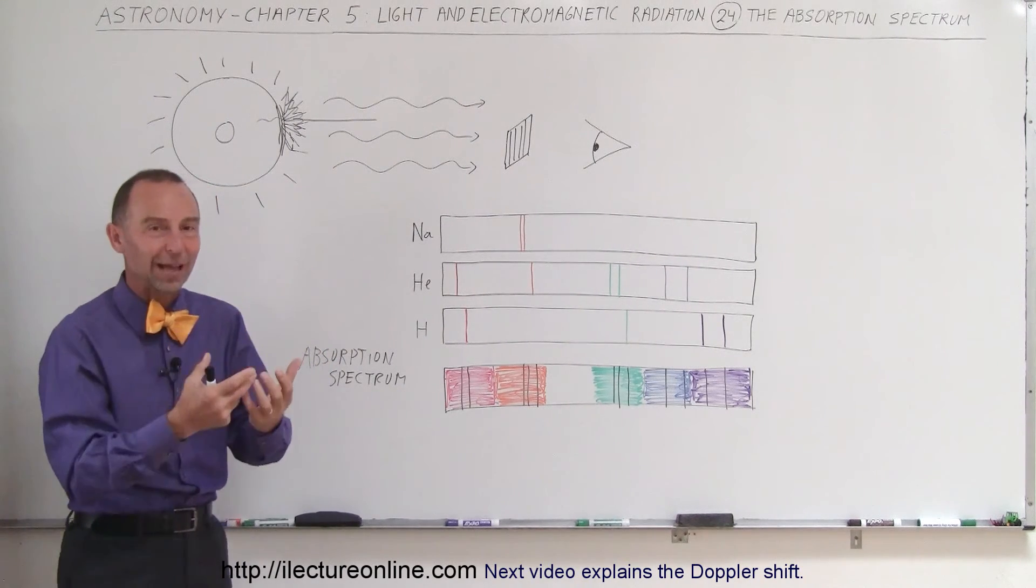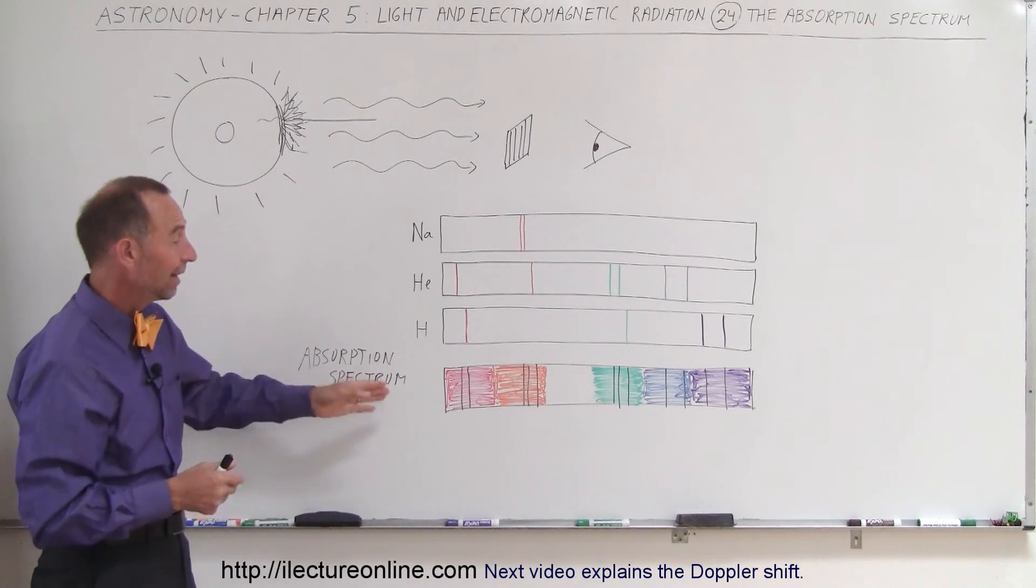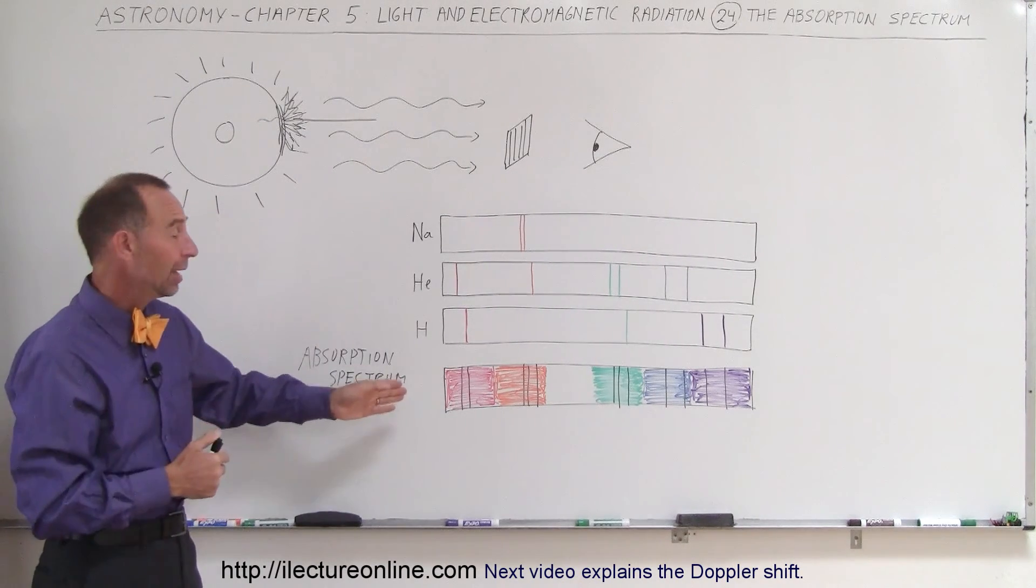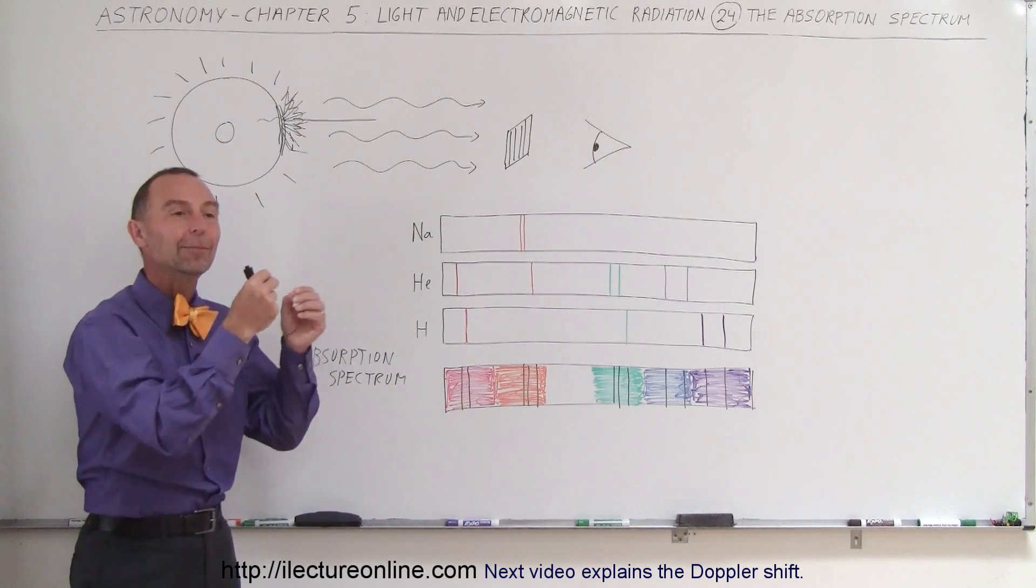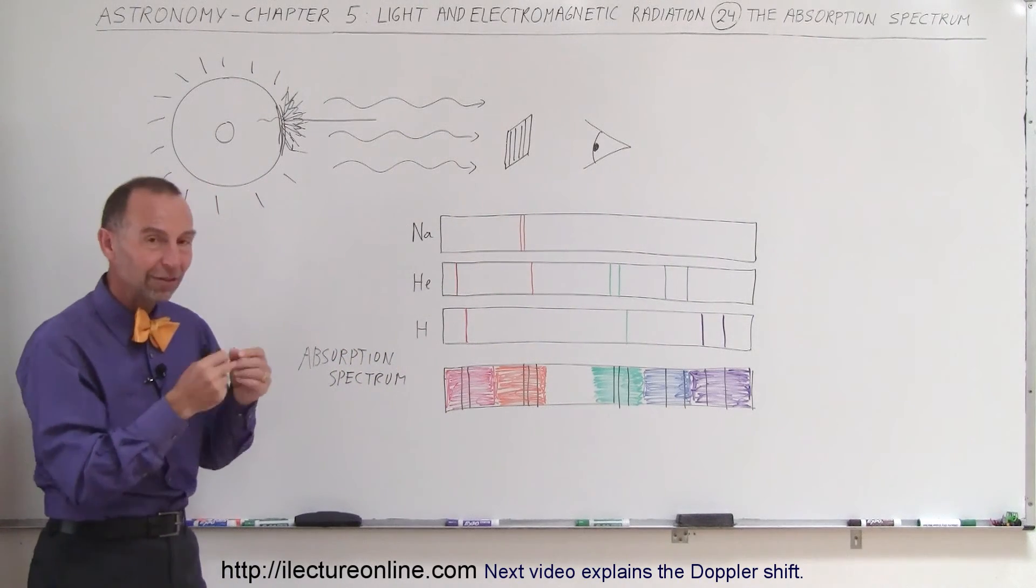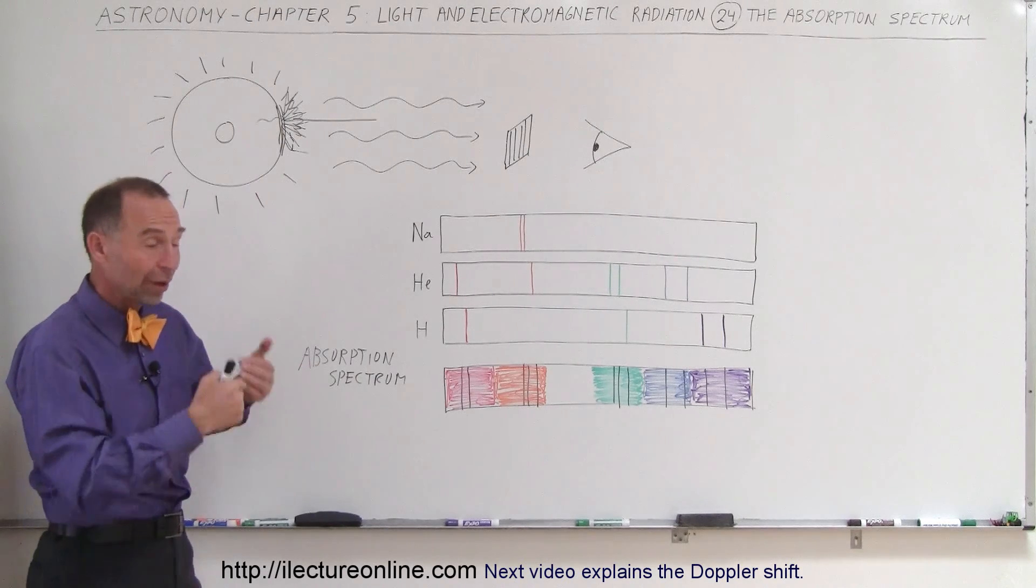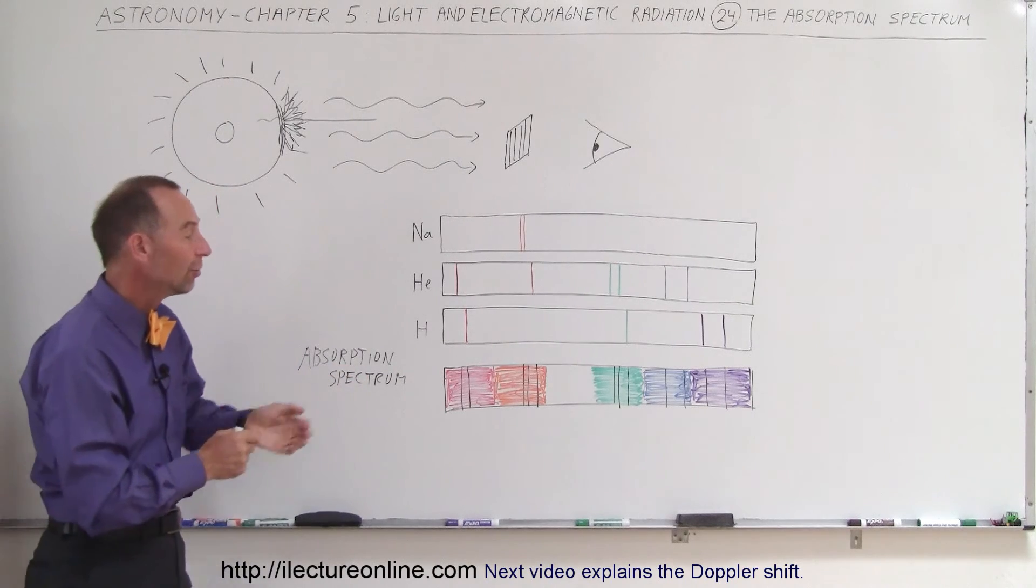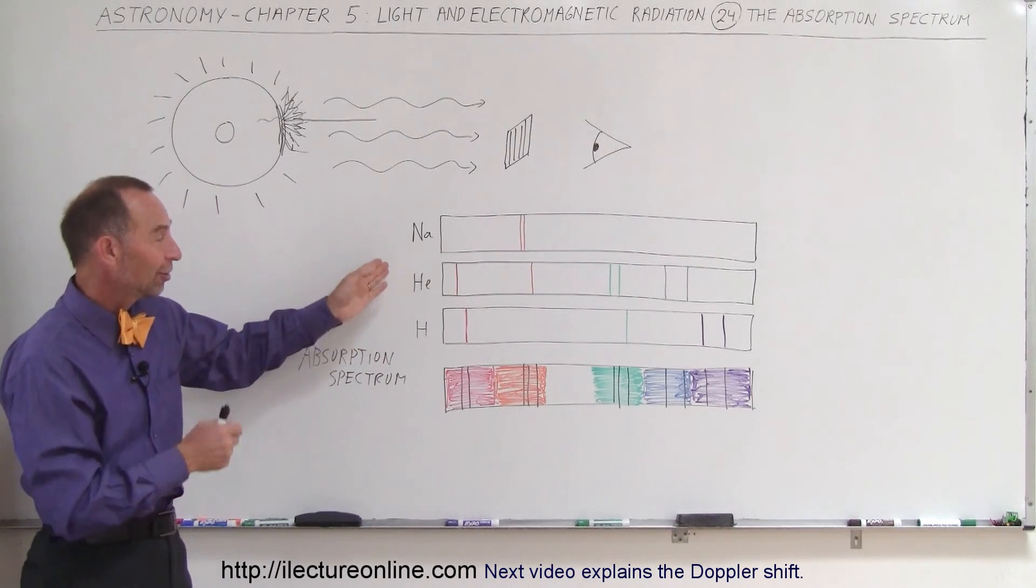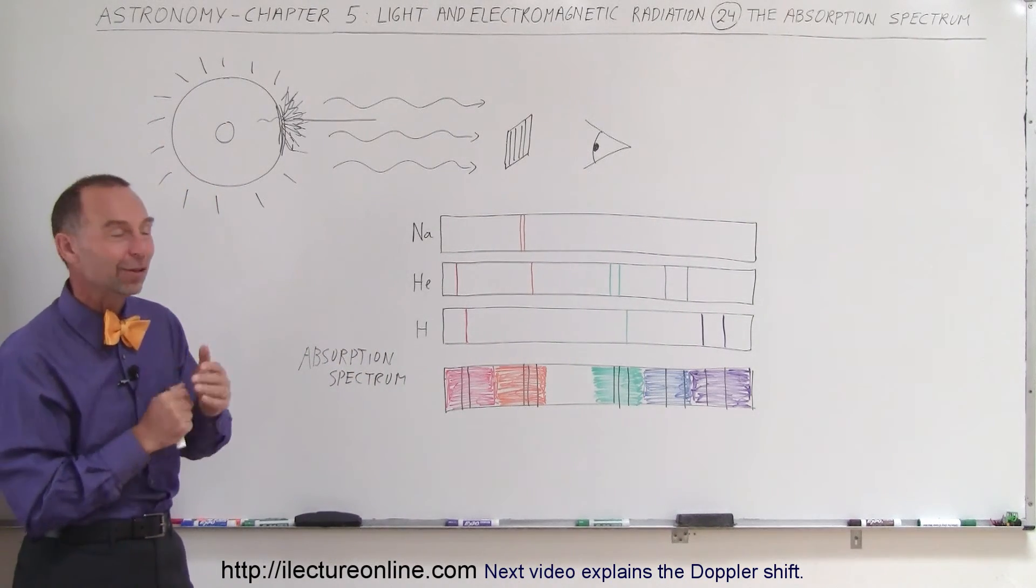It's a noble gas, it doesn't react with anything. We didn't even know it existed, and therefore we didn't have the spectrum. But we saw the missing line that we couldn't pair up with any other element in the periodic table that we have known at the time. And so therefore we said, well, here's a new element that exists, let's call it helium, after the sun's name Helios, and that is how we actually discovered the presence of helium in the sun.